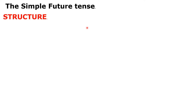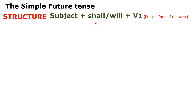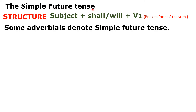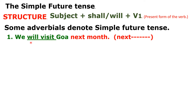Students, let's look at the structure of the simple future tense. The structure is: Subject + shall or will + V1. V1 means the present form of the verb — the base form. Subject + will or shall + base verb. In the simple future tense, certain adverbials are used that denote simple future meaning.